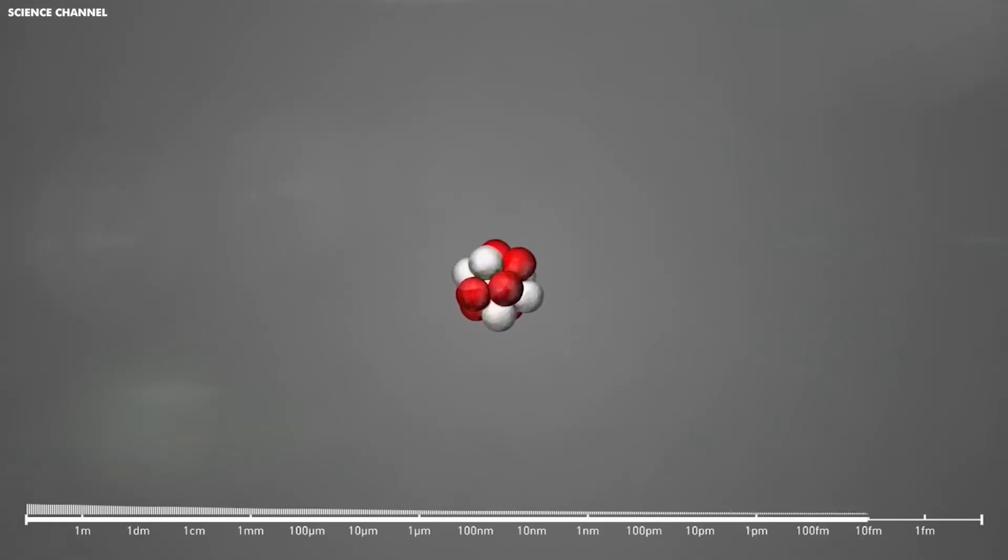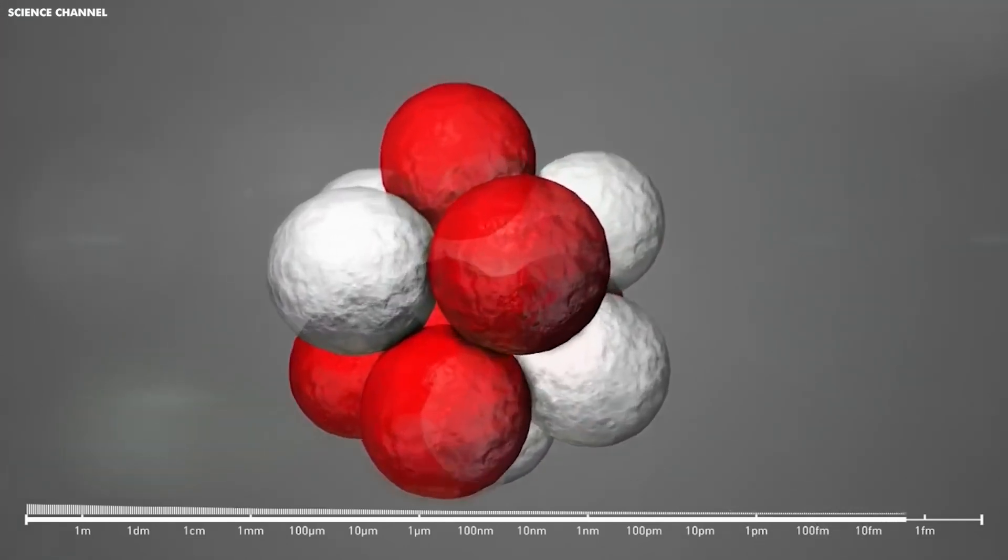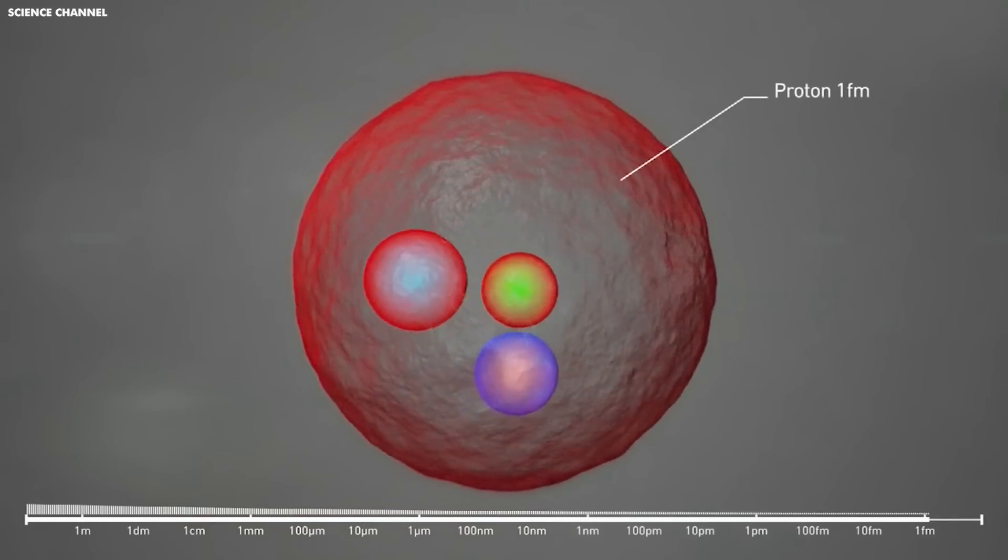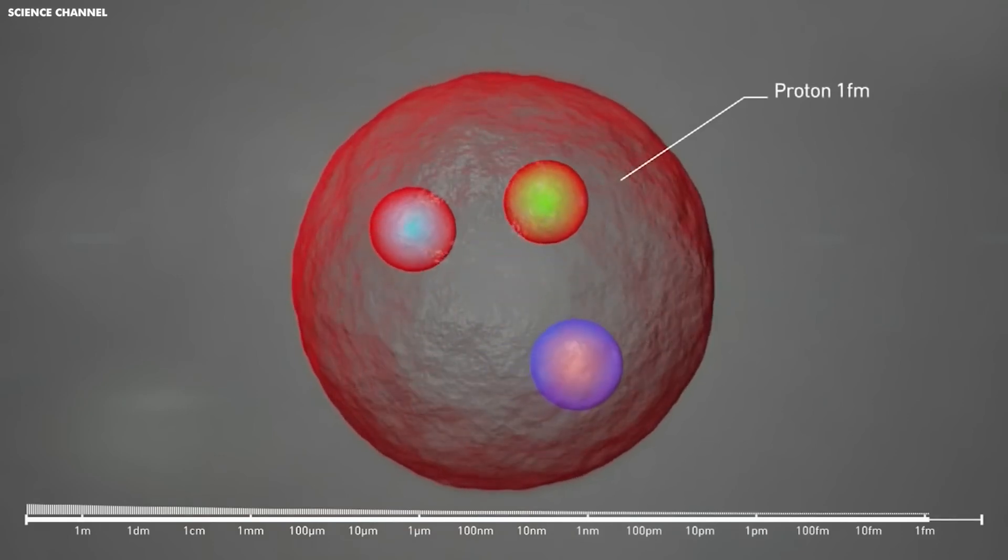However, they can also join to form four quark and five quark particles, which are respectively referred to as tetraquarks and pentaquarks. This process occurs far less frequently.